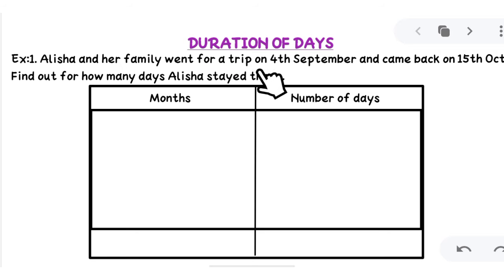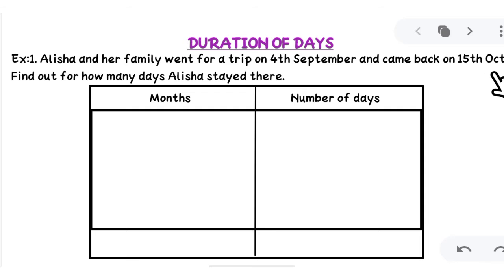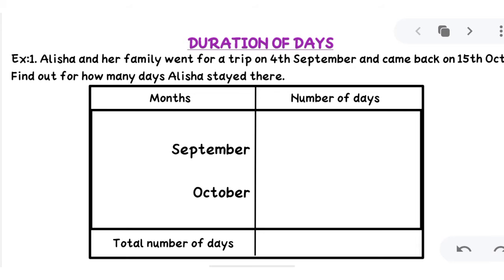Now let's solve an example. Alicia and her family went for a trip on 4th September and came back on 15th October. Find out for how many days Alicia stayed there. First we'll make a table, then write down the months involved. She went on 4th September and came back on 15th October, so the months involved are September and October.